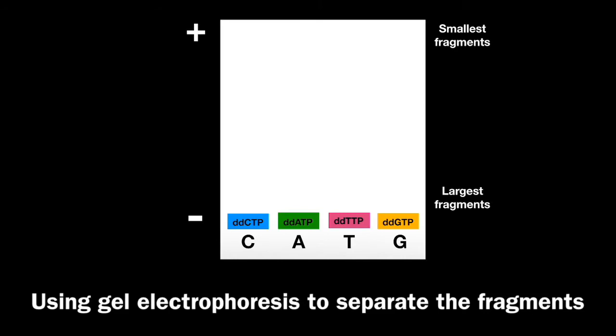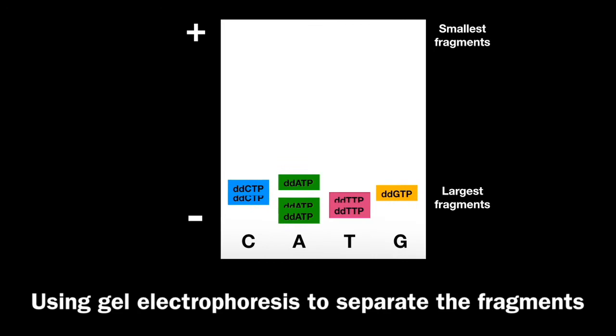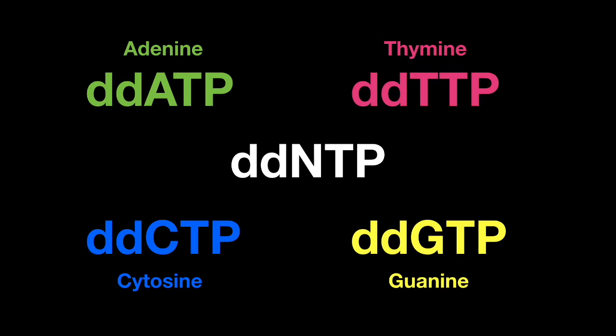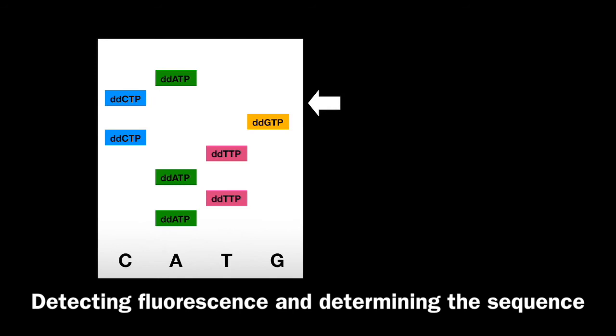Now we can use gel electrophoresis to separate these fragments of different sizes, whereby the smallest fragments travel furthest away from the origin and the largest fragments remain closest to the origin. Notice that these are arranged by the DDNTP that bound and cause DNA replication to stop. Notice also that each of the different DDNTPs has a different coloured fluorescent marker on it and these can be read by a machine that can then determine the base sequence of the DNA.